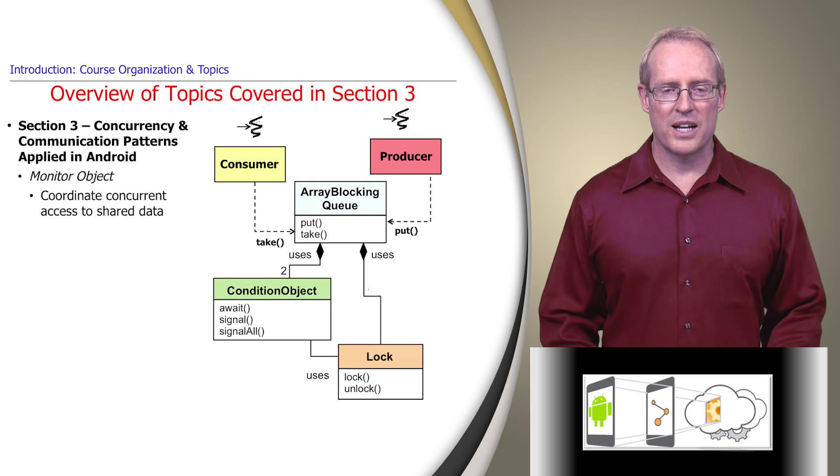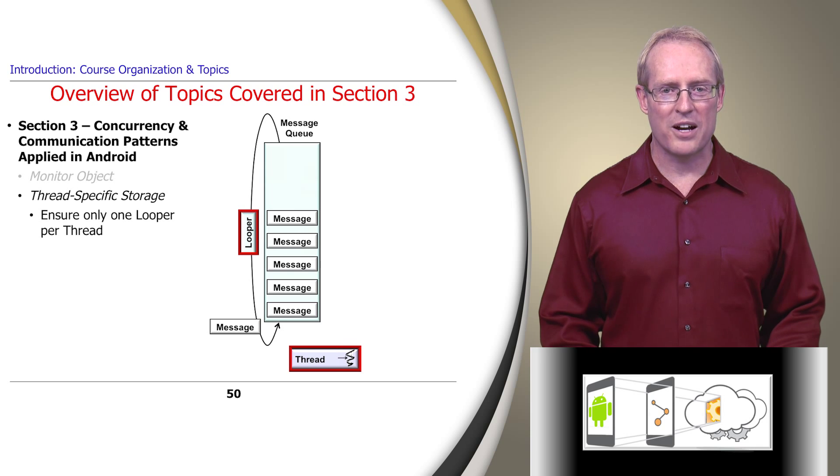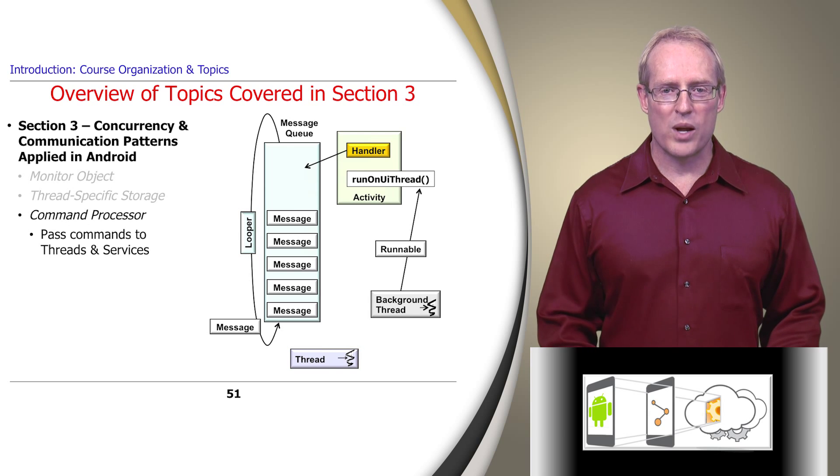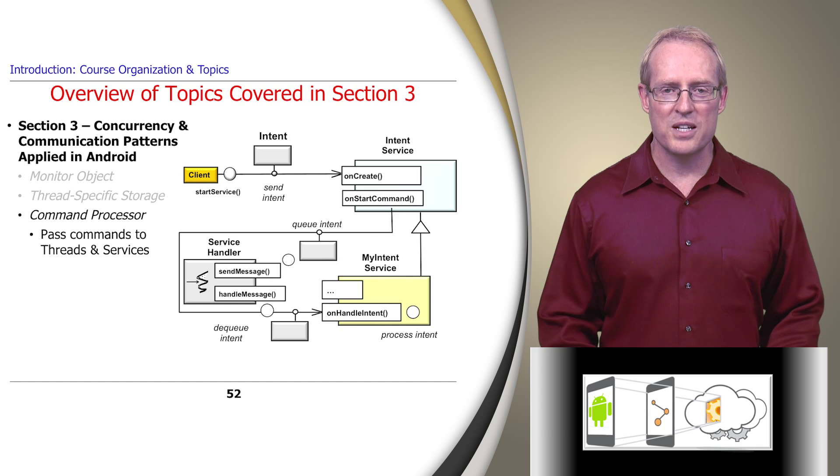For example, Android applies the monitor object pattern to implement the linked blocking queue class in the Java util concurrent package. It applies the thread-specific storage pattern to ensure only one looper is created per thread. It applies the command processor pattern to enable code in a background thread to post a runnable command that's enqueued and processed later in the user interface thread. Android also applies this pattern to its intent service, which handles asynchronous requests, expressed as intents, on demand in the background thread of a service.